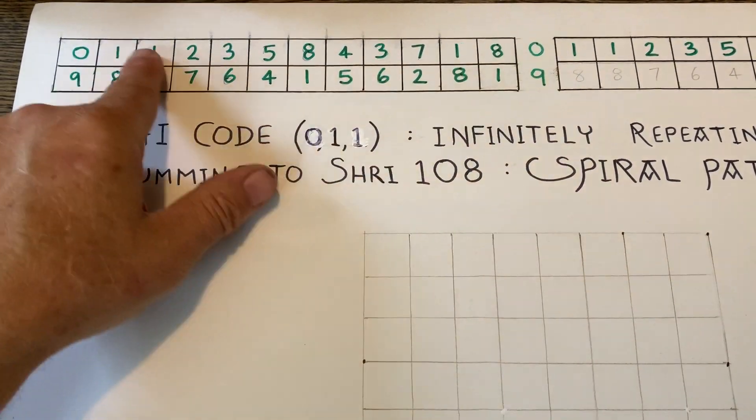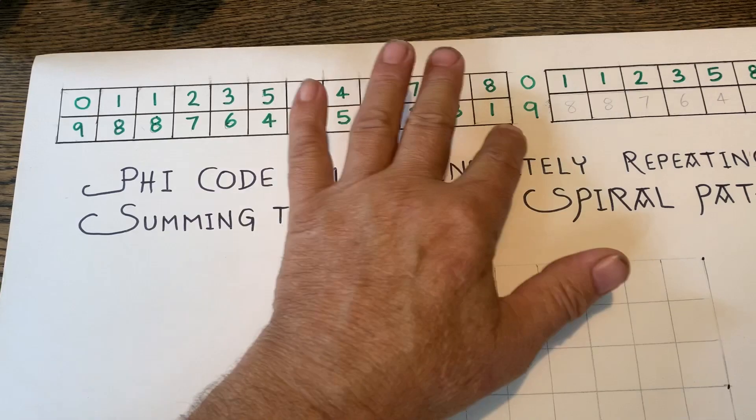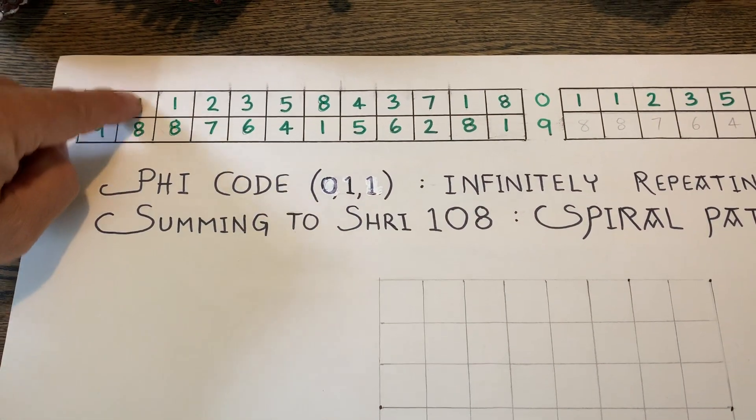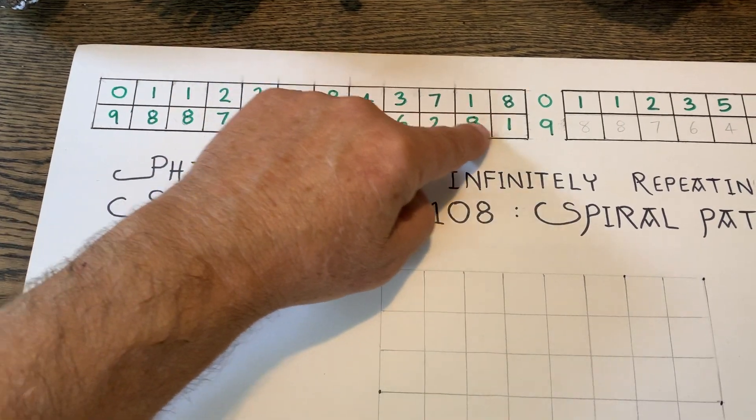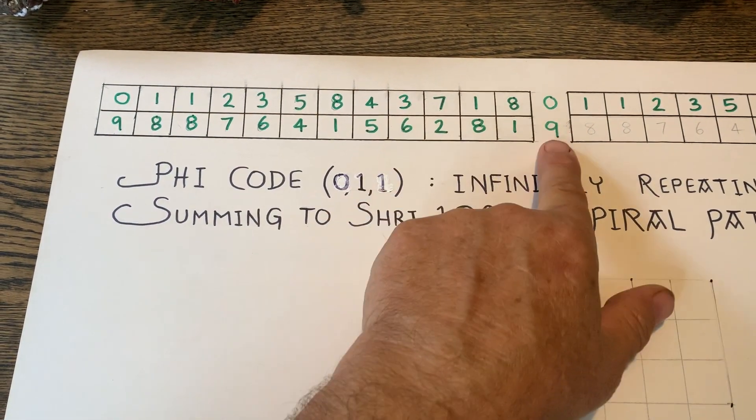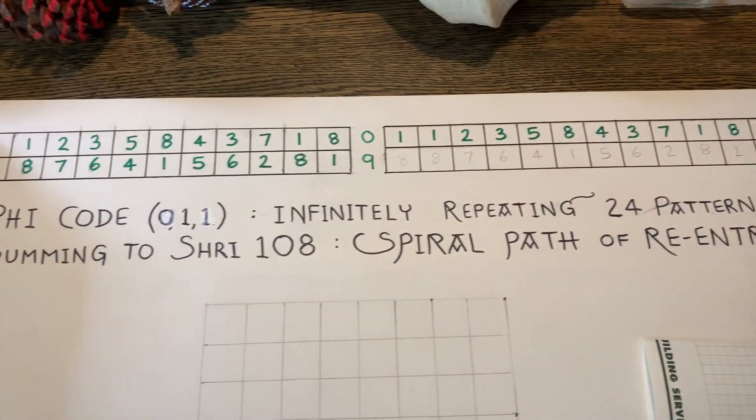You notice that when we get to the 12th number, I do the next 12 underneath. And now everything adds up to nine, all the 12 columns add up to nine, nine, nine, nine. And there's a nine in between. And then all this information here repeats again.